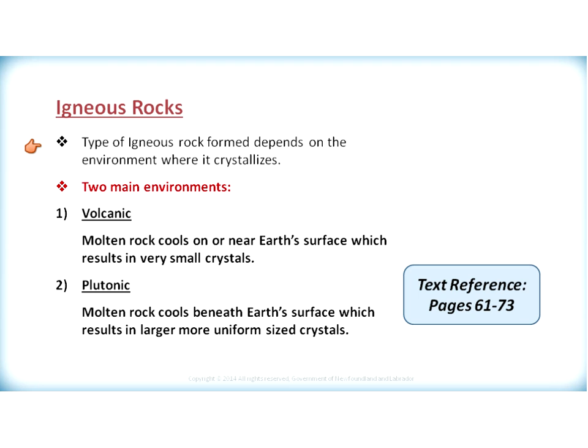The type of igneous rock formed depends on the environment in which it crystallizes. There are mainly two environments in which igneous rocks can crystallize. The first is called a volcanic environment, found at or near the Earth's surface where molten rock cools very quickly, resulting in very small crystals being formed.